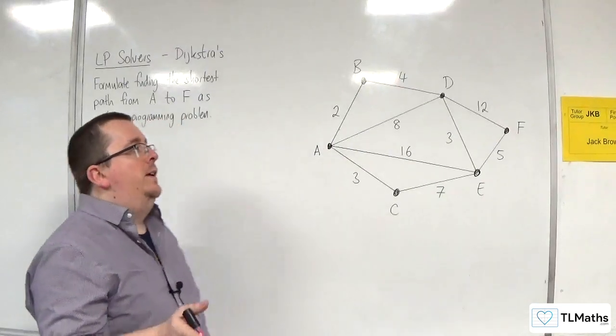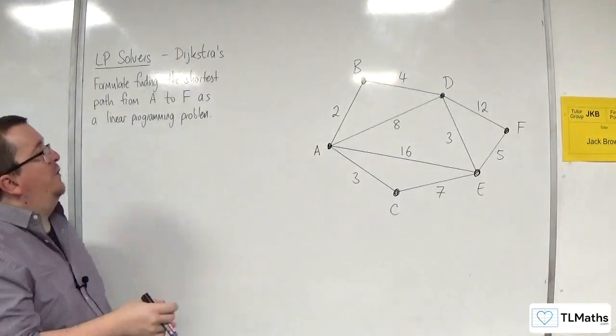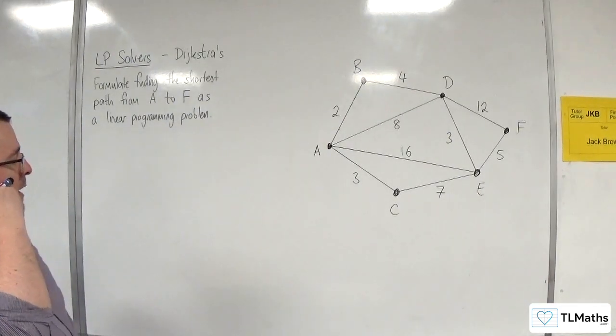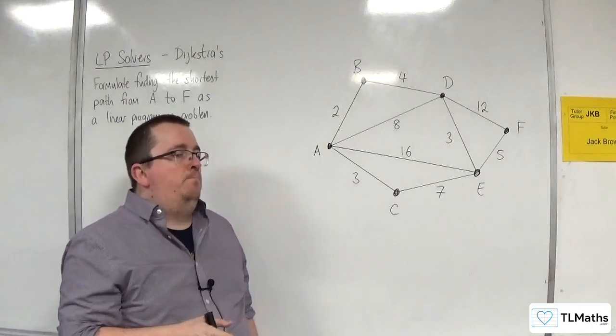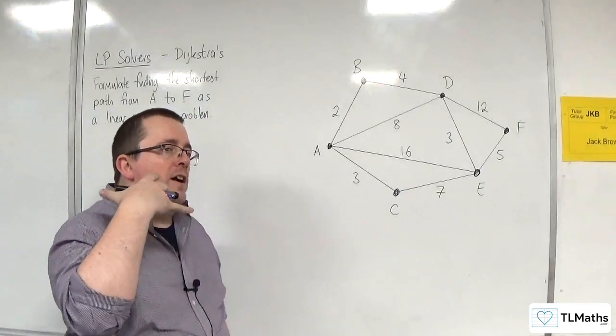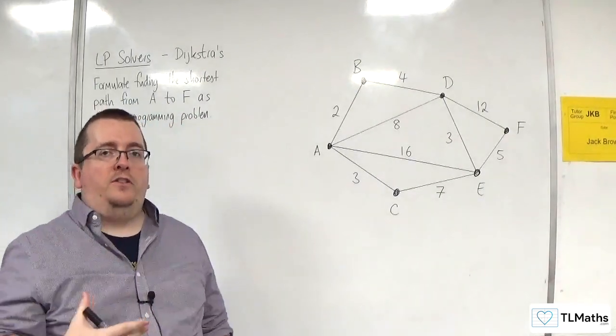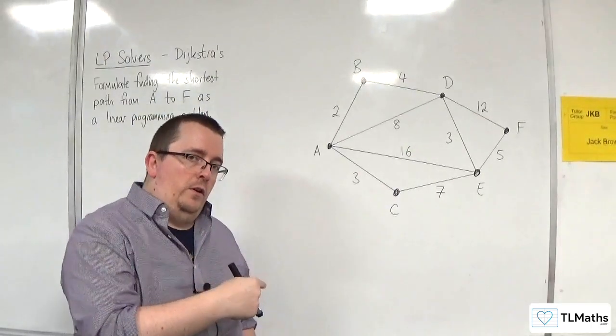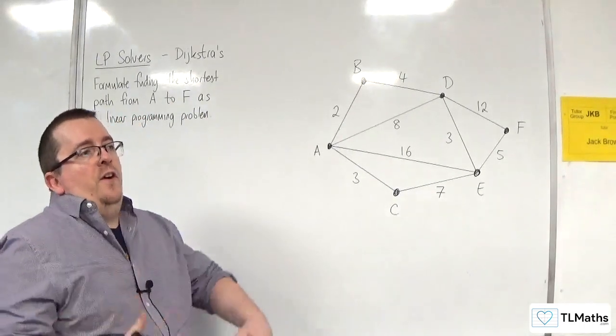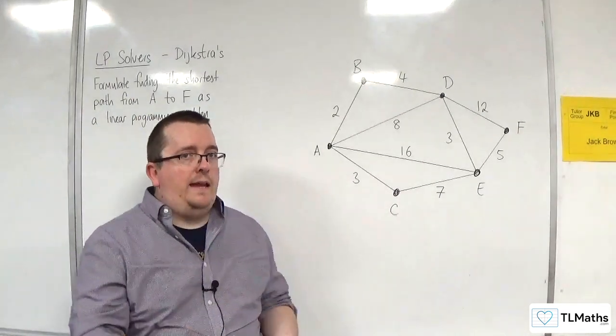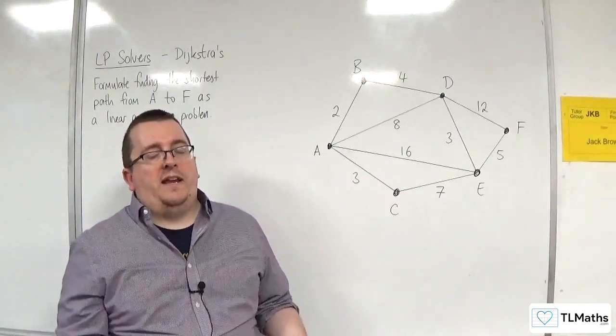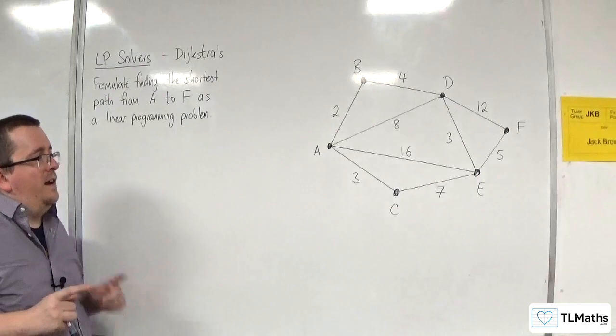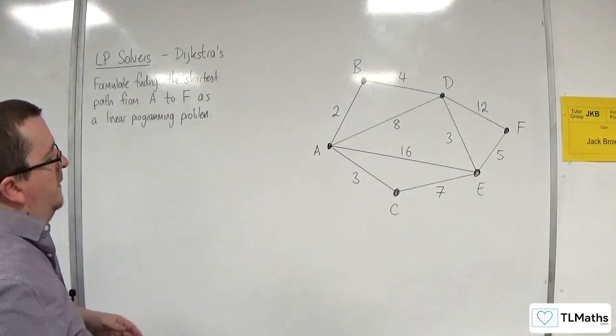In this video, we're going to formulate the problem of finding the shortest path from A to F as a linear programming problem. Now when I go through this, I'm going to go all out, and I know already that there are going to be what you will feel to be redundant edges that I include in the LP solver. The reason for this is that if I include them, there's no problem with me including them, and it's less likely that I'm going to make mistakes in the long run when I do this. So I'll pick them out as we go and explain what I mean.